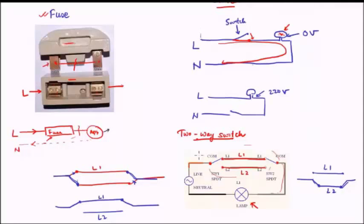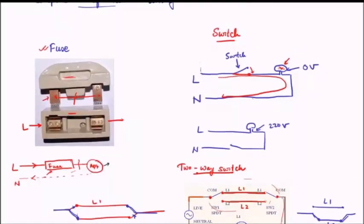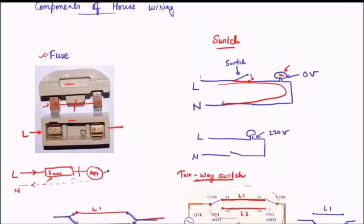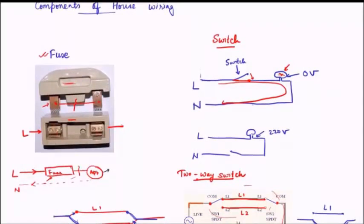We initially discussed the fuse and the switch system, and we saw how these three components — fuse, switch, and two-way switch — are quite important in a house wiring system. The next lecture we will see a few other components which are important to the wiring system, namely earthing or grounding, the three-pin plug and socket system, and some color coding and safety precautions in house wiring. So till the next class, have a great day, goodbye.